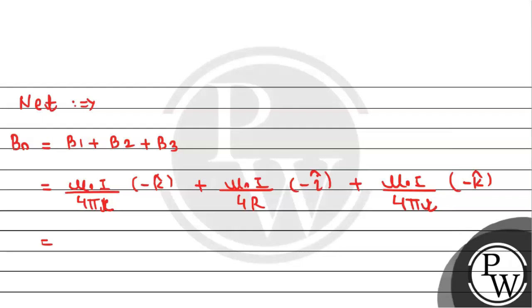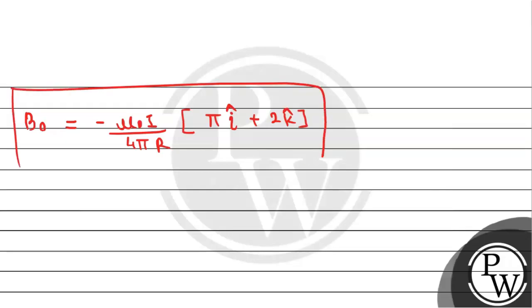The perpendicular distance is basically this ring radius R, so small r equals capital R. We can replace small r with capital R. This becomes two times mu naught I divided by 4 pi R minus k hat plus mu naught I divided by 4R minus i hat. Simplifying, the net B at point O becomes minus mu naught I divided by 4 pi R times (pi i hat plus 2 k hat). This is the required answer.